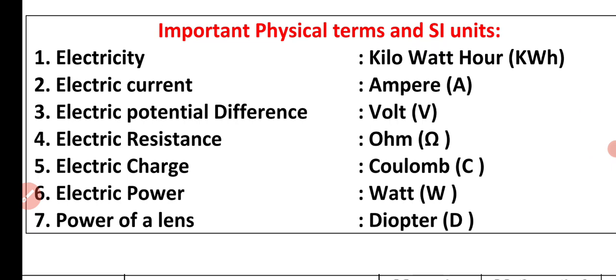First physical term: electricity. SI unit of electricity is kilowatt-hour (kWh). SI unit of electric current is ampere (A). SI unit of electric potential difference is volt (V).